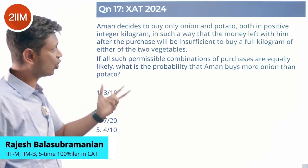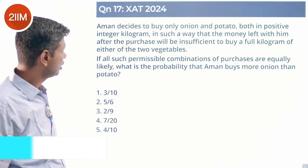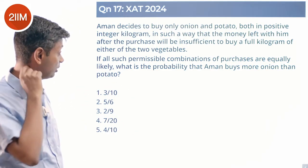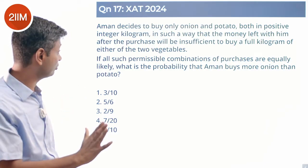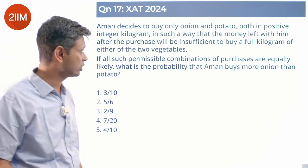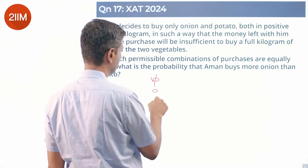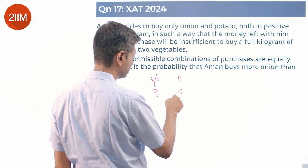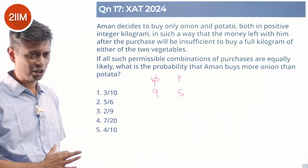The problem: decide to buy only onion and potato, both in positive integer kilograms, such that the money left after the purchase is insufficient to buy a full kilogram of either vegetable. Onion price is ₹9 and potato price is ₹5, buying some number of onions and some number of potatoes.